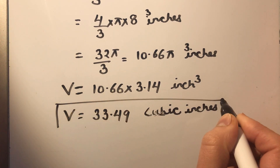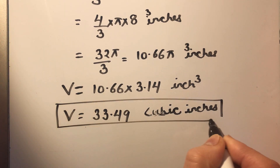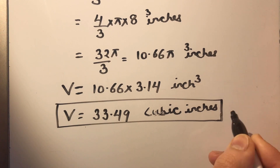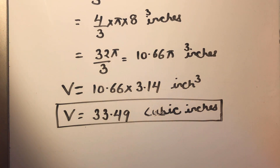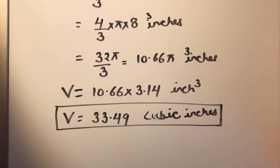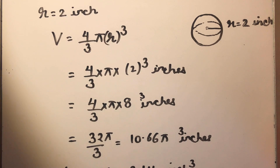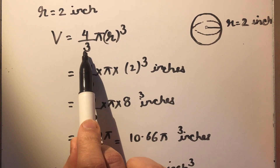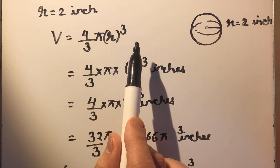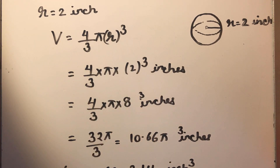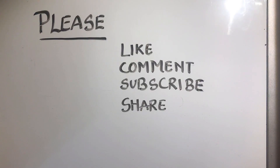This is how we can calculate the volume of a sphere when radius R is given. So the formula to find the volume of a sphere is 4 over 3 pi R cube. Thanks for watching, please like, comment, subscribe and share my videos.